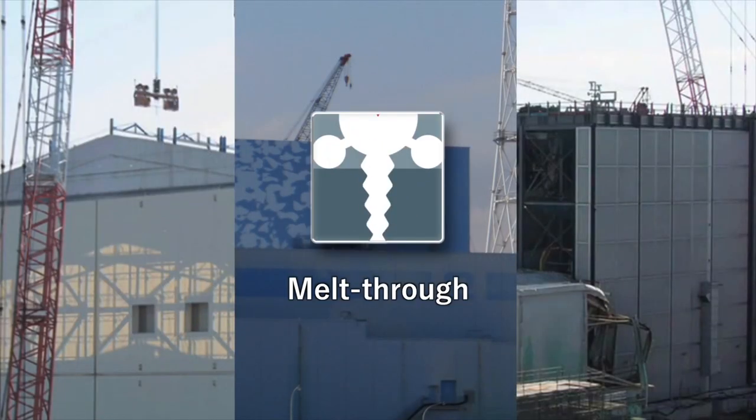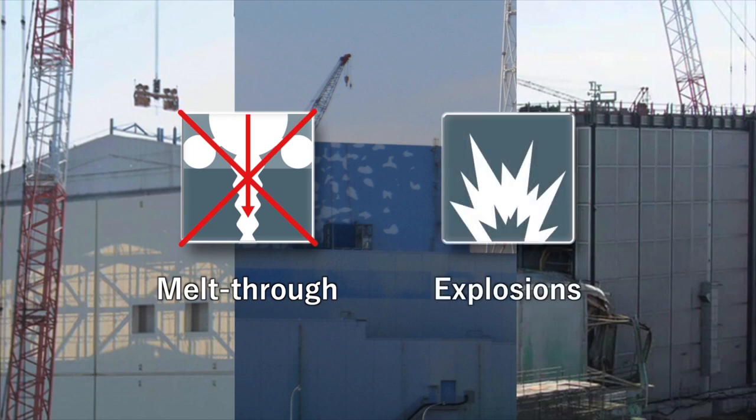Therefore, even if recriticality were to occur, the chances of the fuel debris inside the reactors melting through the reactor buildings and seeping underground are extremely low. Explosions from recriticality are also highly unlikely to happen.